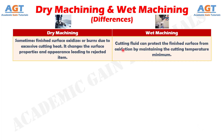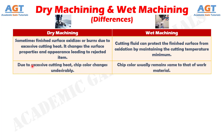Number 10: In dry machining, sometimes the finished surface oxidizes or burns due to excessive cutting heat. Dry machining changes the surface properties and appearance, leading to rejected items, whereas in wet machining, cutting fluid can protect the finished surface from oxidation by maintaining the cutting temperature at a minimum. Number 11: Due to excessive cutting heat, chip color changes undesirably in dry machining, whereas in wet machining, chip color usually remains the same as that of the work material.